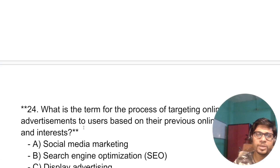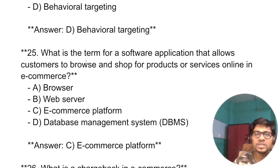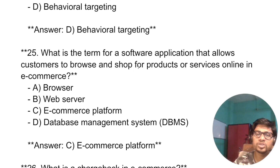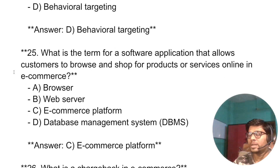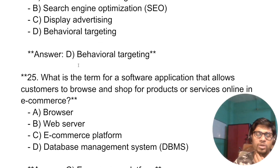What is the term for targeting online advertisements to users based on their previous online behavior and interests? The answer is behavioral targeting. What is the term for software applications that allow customers to browse and shop for products or services online in e-commerce? That is called an e-commerce platform. So I have given you these 25 questions on Fundamentals of E-Commerce. These questions will be very important — once go through and check other subjects on my channel. Wishing you all the best. Bye bye, take care.